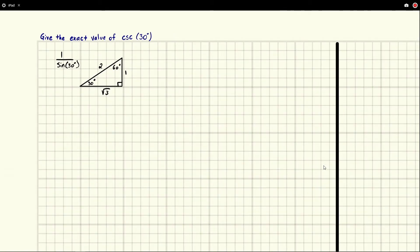So using our special triangle we can go ahead and evaluate this. Sine of 30 degrees is just the sine of this angle here and that's opposite over hypotenuse, or 1 half.